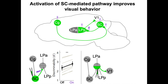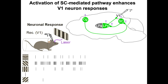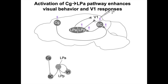LP neurons project to V1, so we wondered whether this pathway modulates V1 responses. We did cell-attached recordings in awake head-fixed mice. This is an example of a V1 neuron responding to drifting gratings at different orientations, and its orientation tuning curve. Activation of SC neurons, the SC to LP projection, or LP neurons strongly increases the amplitude of the response without changing the shape of the tuning curve.